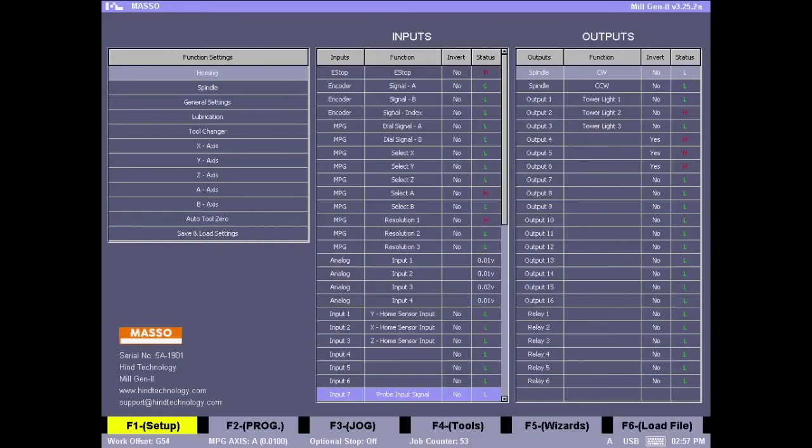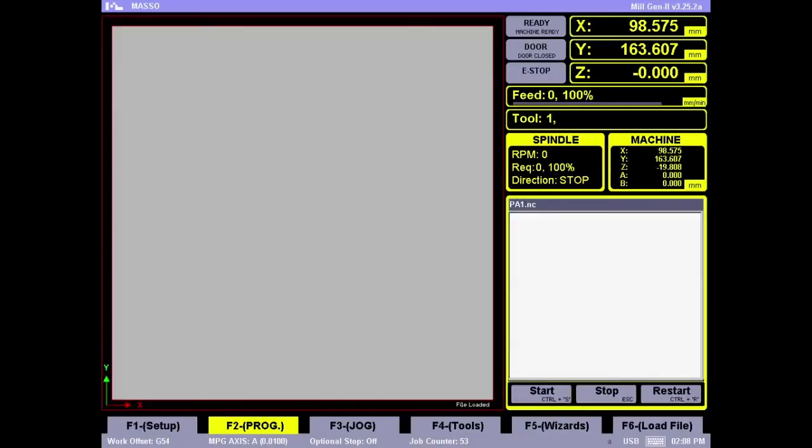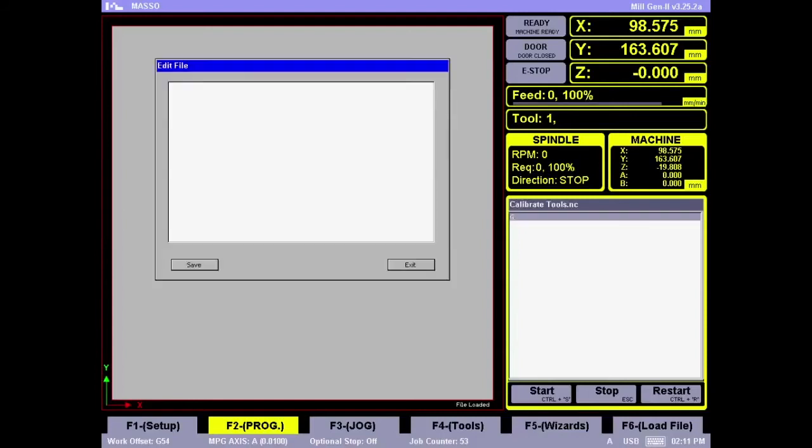On the Masso we will now need to make up a small probing cycle. So we will go to the F2 screen, press Control N to create a new file. We will name this file, press Enter to save. And now in this file we will write the probing cycle G38.2. We will put in the Z travel to be minus 50 because we are going towards the bed, so the value has to be negative. And we will put a slow feed rate of about 150 so the tool moves very slowly.